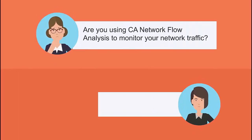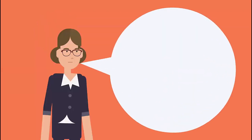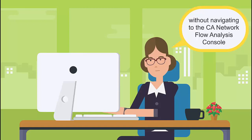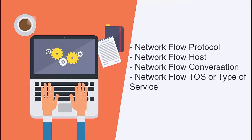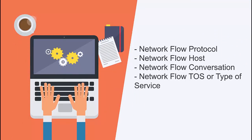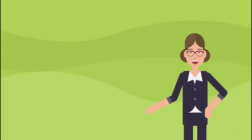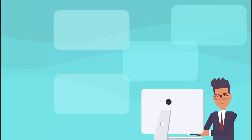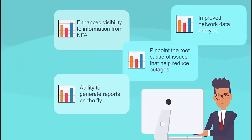Are you using CA Network Flow Analysis to monitor your network traffic? You will be happy to know that you can now drill down CA Network Flow Analysis data for an interface within Performance Center without navigating to the CA Network Flow Analysis console. The Interface Context page now supports the following views: Network Flow Protocol, Network Flow Host, Network Flow Conversation, and Network Flow TOS or Type of Service. You can perform drill-down operations from these views and gain multiple benefits such as enhanced visibility to information from NFA, ability to generate reports on the fly, pinpoint the root cause of issues that help reduce outages, and improved network data analysis.